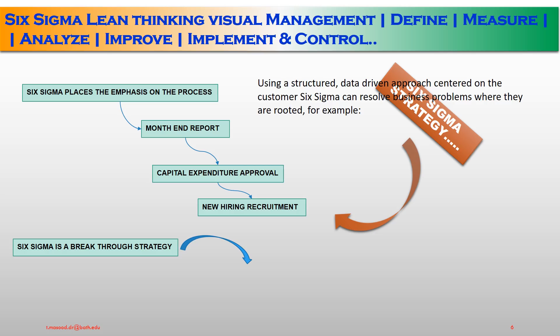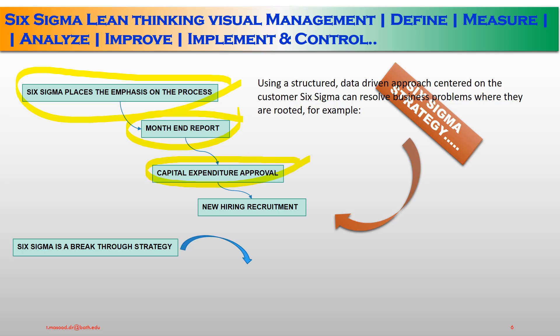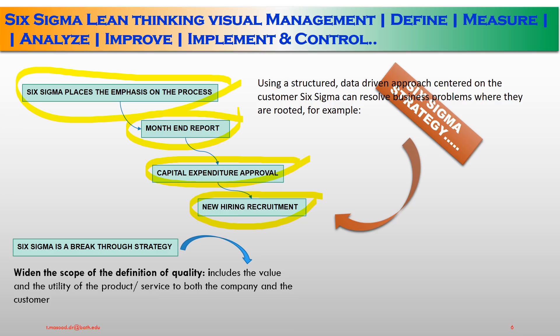Now, Six Sigma strategy. Six Sigma places emphasis on the process first, using a structured, data-driven approach centered on the customer. Six Sigma can resolve a business problem where it is rooted — for example, monthly-end reports, capital expenditures, rules, and new hiring recruitment processes and how they are linked to each other. Six Sigma is a breakthrough strategy that widens the scope of the definition of quality to include the value and utility of the product or service to both the company and the customer.